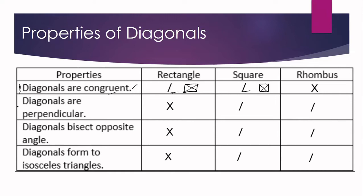Number two: the diagonals are perpendicular. In a square and a rhombus, the diagonals are perpendicular, meaning the two diagonals intersect at 90 degrees. This is the symbol for perpendicular. So if we have a square, the diagonals intersect and as they intersect, the angle they create is a right angle. That is what we mean by perpendicular. In a square and a rhombus, the diagonals form a right angle of 90 degrees at their intersection.